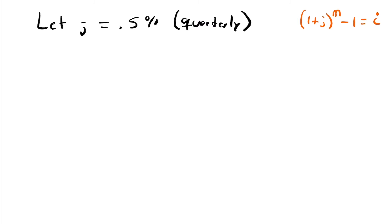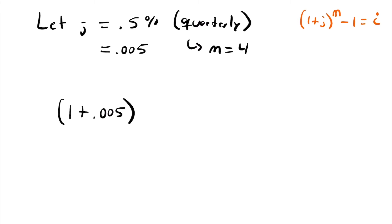In this case, since it's a quarterly rate, it takes place four times a year — so M equals 4. We set up the formula: 1 plus J, which is 0.5% or 0.005 in decimal format, to the power of M, which is 4. Subtracting 1 gives us our annual effective interest rate I.